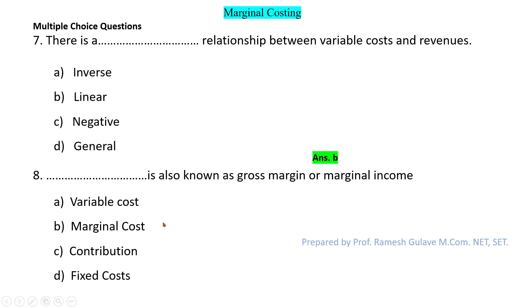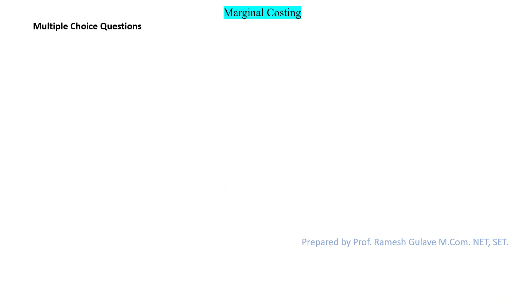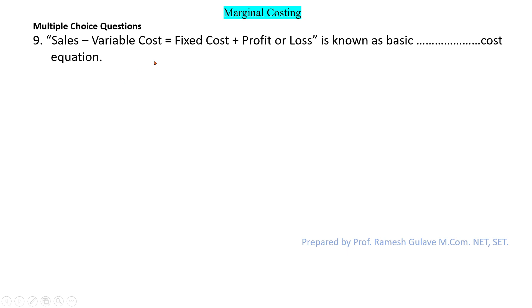The next question says: dash is also known as gross margin or marginal income. We know that contribution is also known as gross margin or marginal income. So option C — contribution — is the right answer.